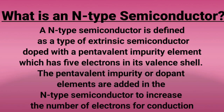Extrinsic Semiconductors are of two types: N-type Semiconductor and P-type Semiconductor. An N-type Semiconductor is defined as a type of extrinsic semiconductor doped with a pentavalent impurity element which has five electrons in its valency shell. The pentavalent impurity or dopant elements are added in the N-type semiconductor to increase the number of electrons for conduction.